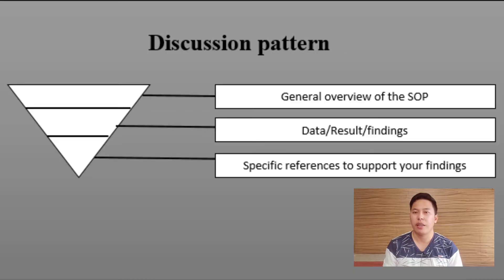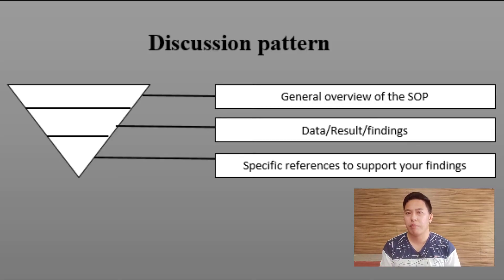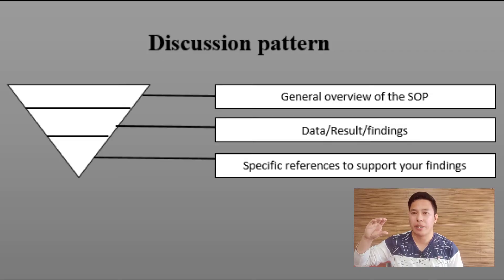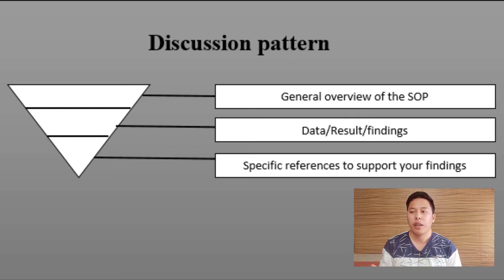As you might observe, there is a pattern in presenting the results of each statement of the problem, and that pattern is an inverted pyramid — from the general to the specific. I presented the statement of the problem first, which is the general idea, then inserted the findings or table answering that statement, and afterwards supported it with specific related literature. You are going to apply this pattern throughout all your statements of the problem to ensure coherence and a seamless discussion of the results.